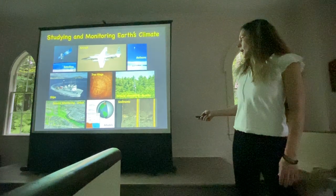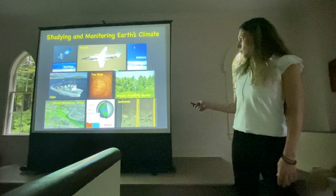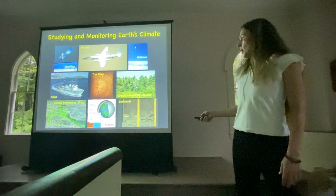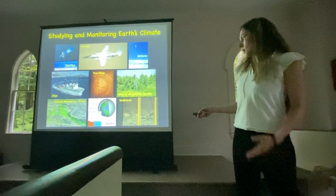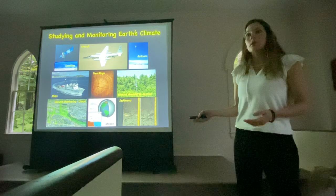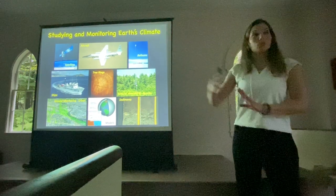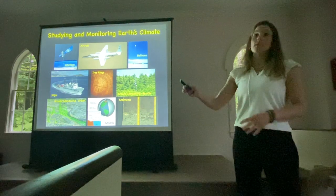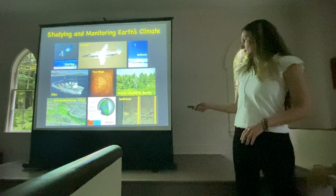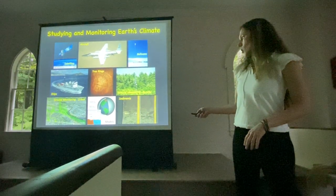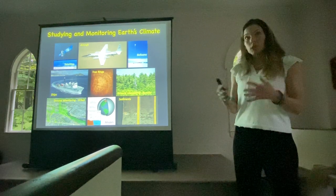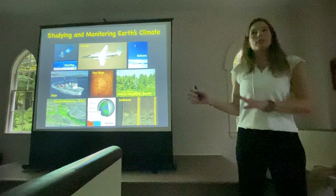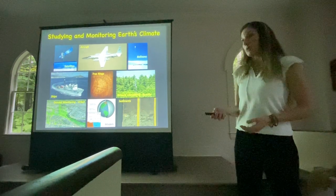We can also look at sediments. All this information collected from all these different ways of observing the system we then feed into what we call global circulation models. These are the models that we use to forecast what things are going to look like — when we say it's going to warm up by this much, this is where it's all coming from. It's a combination of our understanding of the physics in mathematical form, but it's also fed by all the observations that we have so far.